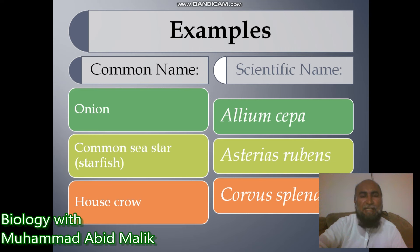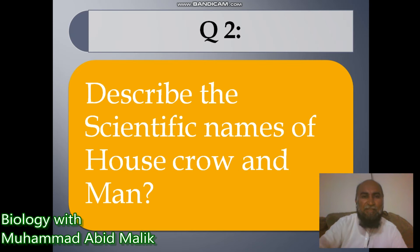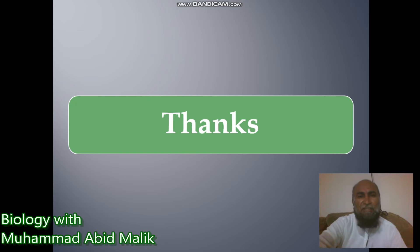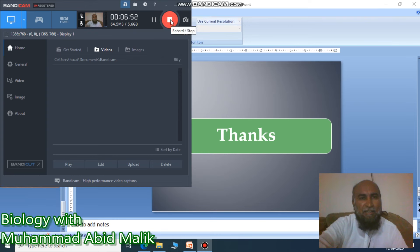For evaluation: first question — write a note on the rules of binomial nomenclature. Second question — describe the scientific names of house crow and man. If you know the answers, please mention them in the comments. Thank you very much. If you find our videos helpful, please subscribe to the channel Biology with Muhammad Abid Malik and recommend these videos to your friends. Take care.